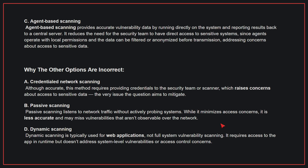Why the other options are incorrect: A. Credentialed Network Scanning — although accurate, this method requires providing credentials to the security team or scanner, which raises concerns about access to sensitive data, the very issue the question aims to mitigate. B. Passive Scanning — listens to network traffic without actively probing systems; while it minimizes access concerns, it is less accurate and may miss vulnerabilities that aren't observable over the network. D. Dynamic Scanning — typically used for web applications, not full-system vulnerability scanning; it requires access to the app at runtime but doesn't address system-level vulnerabilities or access control concerns.